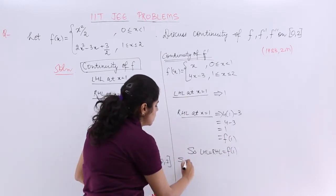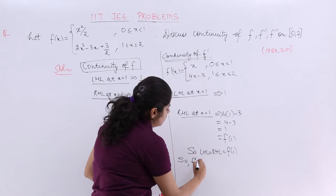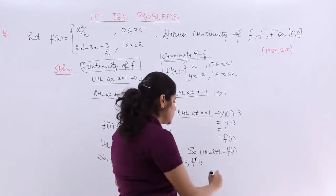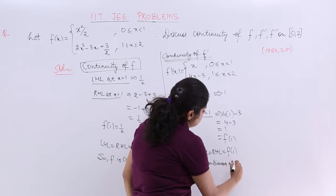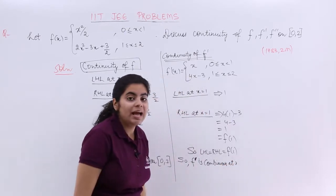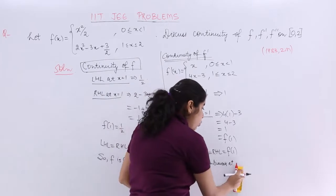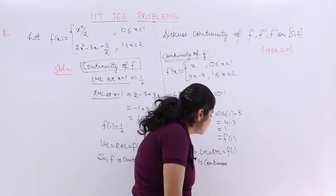So again I say LHL equals RHL equals f'(1). So what happens? So even f' is continuous at x equals 1 and so it is continuous on the whole interval [0,2] including everything.